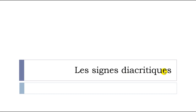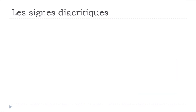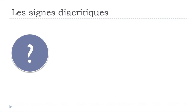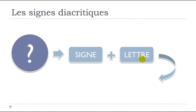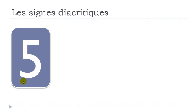Les signes diacritiques — and I know that the title is quite scary, and you probably think that's all, I don't want to watch this video. But trust me, it's quite important for a good reason. Basically, what are les signes diacritiques? It's the idea that at one point in the language, we will use un signe — a sign — something that you will add to a letter, and by adding this sign to the letter, it will make a new letter. Something quite common in French. The good news is that we've got only 5 signes diacritiques.